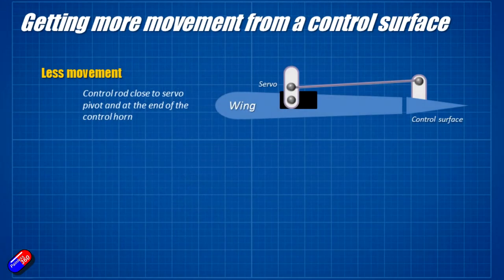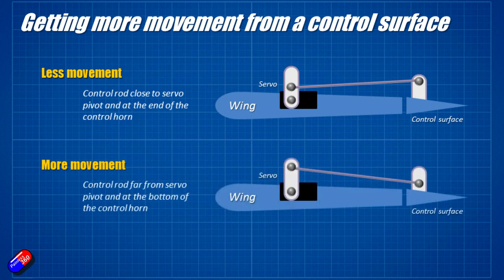However, before you start playing with things on the radio, I would personally recommend extending the travel on a fixed wing using the hardware method. The way this works is that if you haven't got enough travel on your control surface, move the control rod further away from the servo horn, or further down towards the bottom of the control horn on the control surface. That will give you more throw, and that would be my recommended way of doing it first.